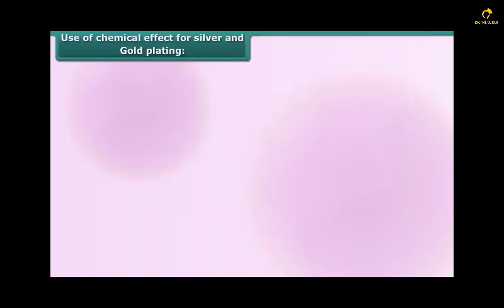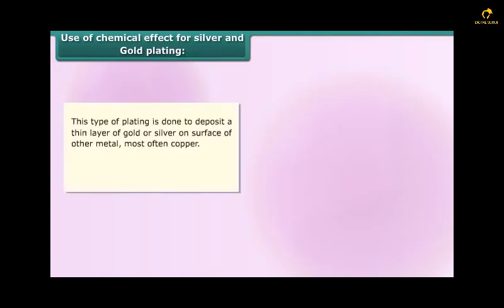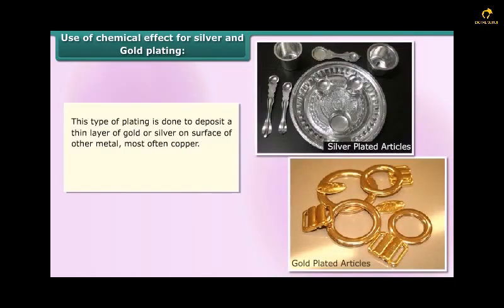Use of chemical effect for silver and gold plating: This type of plating is done to deposit a thin layer of gold or silver on the surface of other metals, most often copper. It gives a gold or silver finish to artificial jewelry and ornaments.